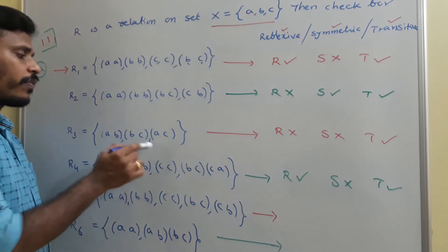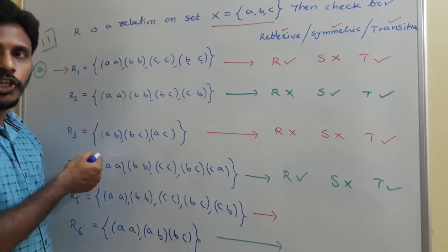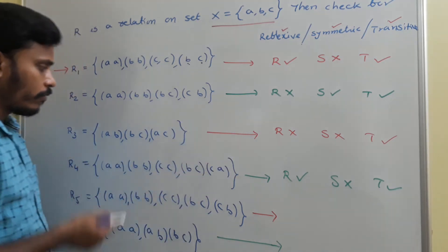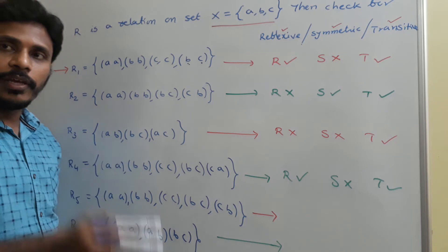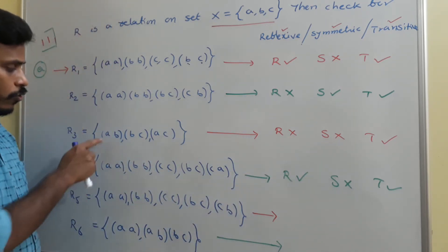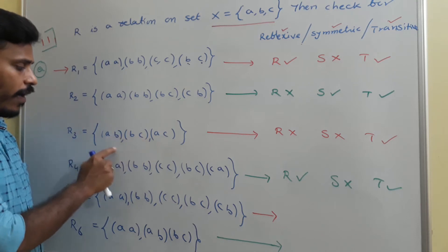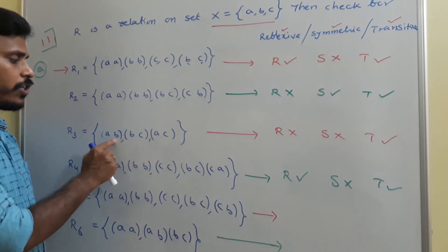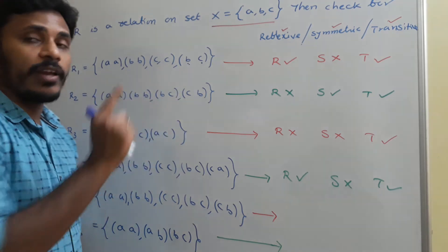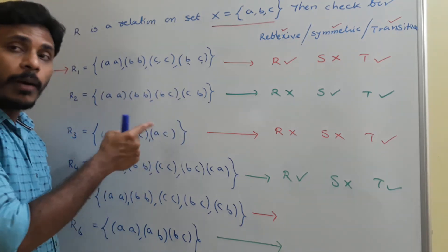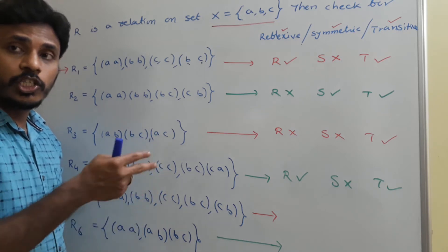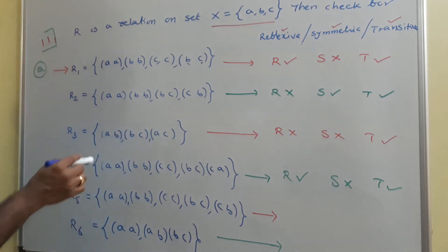Coming to r3: (a,a), (b,b), (c,c) — these three pairs are not there, so it is not reflexive. (a,b) is there but (b,a) is not, so it is not symmetric. For transitive: (a,b) and (b,c) are present; b is common, transferring gives (a,c), and (a,c) is also there. There are no other pairs where transitivity fails, so r3 is transitive.